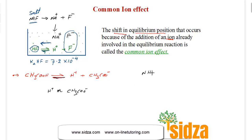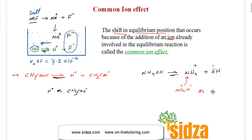One more example: ammonium hydroxide (NH₄OH) is a weak base that dissociates into NH₄⁺ and OH⁻ ions. We can decrease its dissociation by adding ammonium chloride, which provides the common NH₄⁺ ion, shifting equilibrium backward. Alternatively, adding sodium hydroxide increases the hydroxide ion concentration, also shifting the equilibrium backward and decreasing the dissociation of ammonium hydroxide.